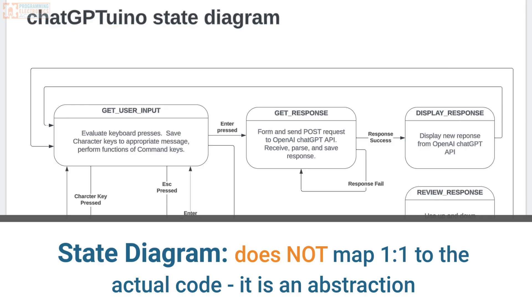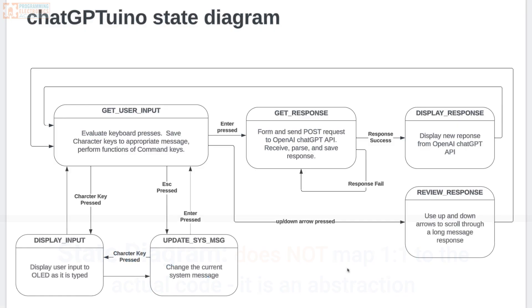There may be some overlap, but really a state diagram is an abstraction. It tells you about the system at a level of detail that's meaningful for thinking about it and conversing about how the program functions as a whole, but not necessarily in its minute detail. When we're talking about how the code is actually written — like what functions are used, what code structures — then we're talking about its implementation.